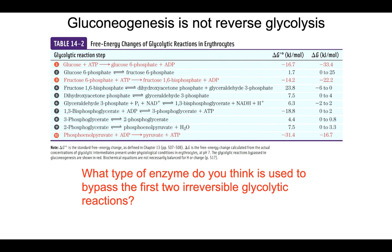Gluconeogenesis may seem like a simple reversal of glycolysis. But if you'll remember, there are three reactions in glycolysis that are irreversible under cellular conditions. We have the first one catalyzed by hexokinase, the second reaction catalyzed by phosphofructokinase 1, and the third reaction catalyzed by pyruvate kinase. Each one of these has such a negative delta G under physiological conditions that they are simply irreversible, which means we can't use those enzymes to go in the other direction. We cannot use pyruvate kinase to convert two molecules of pyruvate into two molecules of phosphoenolpyruvate.